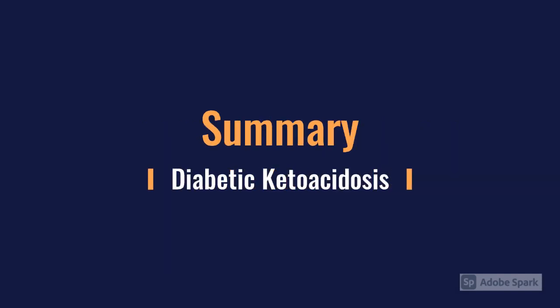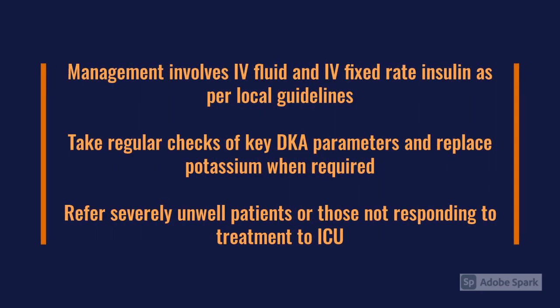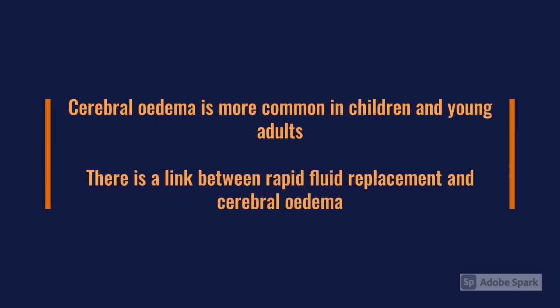So that's a brief jaunt through diabetic ketoacidosis. We've covered the definition, the pathophysiology, and how these patients present — from the classic triad of polydipsia, polyphagia, and polyuria, to more subtle findings like abdominal pain, vomiting, and general malaise, right through to unconsciousness. We've discussed management with IV fluids and IV insulin, and the investigations to monitor. We've also covered referral criteria to HDU or ITU based on response to the initial DKA protocol. Don't forget the link between rapid fluid replacement and cerebral oedema.